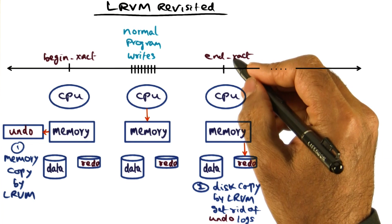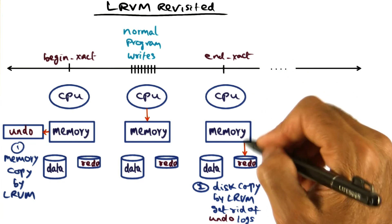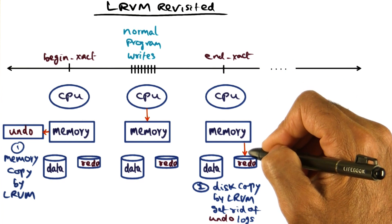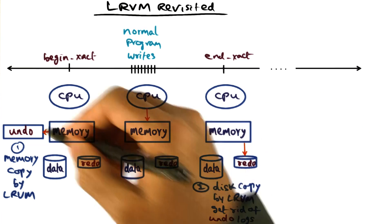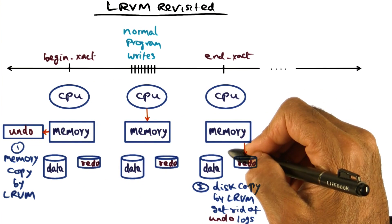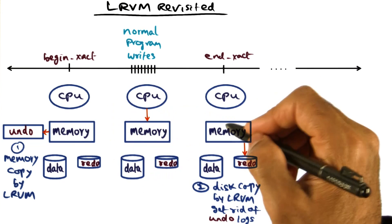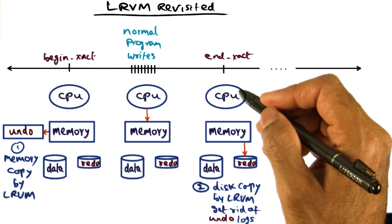And at this point, at the commit point, the other thing that LRVM would do is, in addition to forcing the log record to the disk, it will also get rid of the undo record because undo record is no longer needed for this transaction since the transaction is successfully committed.